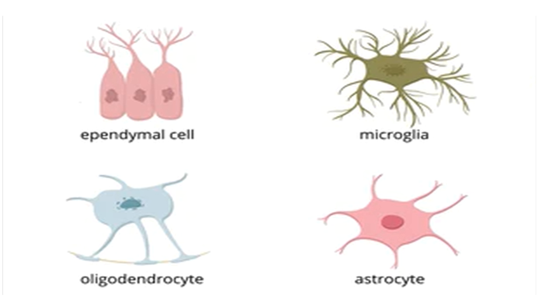Welcome to the 8th episode of the Neuroanatomy Series. Today we are going to learn about Neuroglia. As I said earlier, every body system has some functional cells and some supporting cells. Functional cells carry out the primary function of that system, while supporting cells assist those functional cells and have many duties other than the key function of that system.